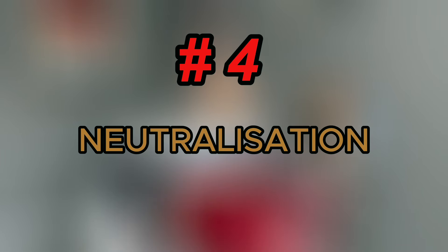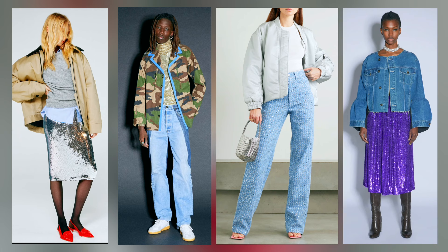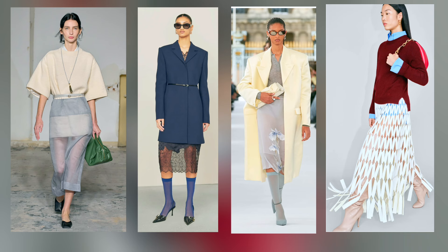The fourth styling trick is neutralization — you take one really standout piece, like a bright skirt or a sequined skirt, and pair it with normal basics. Cotton, wool, denim blazers, twill, gabardine, or chinos work nicely with sequins. Similarly, if you bring something transparent — a transparent skirt, which is quite trendy — you neutralize it with other, more understated textures.